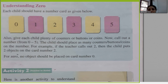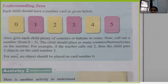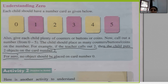Understanding zero: each child should have a number card as given below. Give each child plenty of counters, buttons, or coins. Call out a number from zero to five; the child should place that many counters on the number card. For example, if the teacher calls out two, the child puts two objects on card number two.